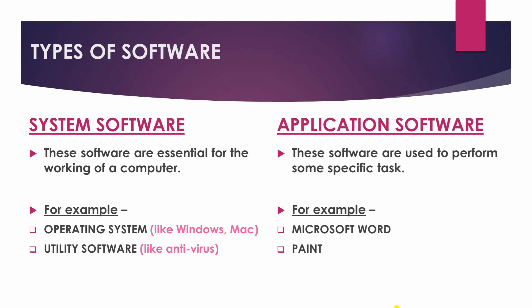There are two types of software: system software and application software. System software is essential — meaning required, we need it — it is very important for the working of a computer. Application software is used to perform some specific, particular tasks.